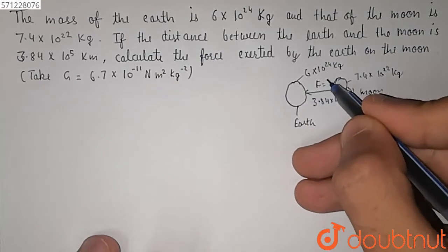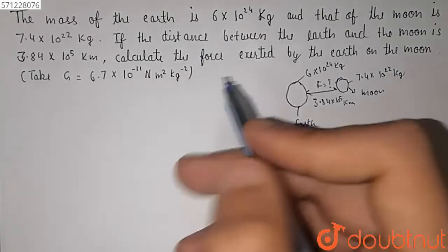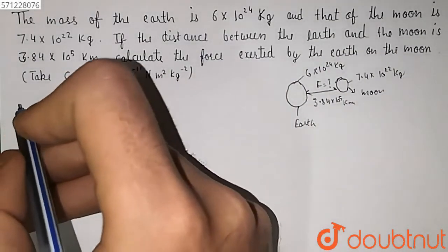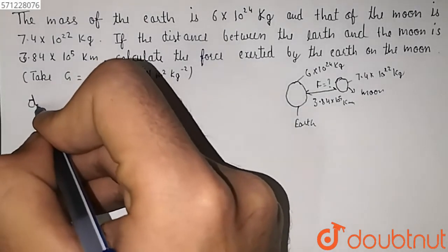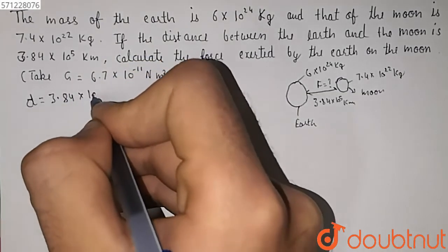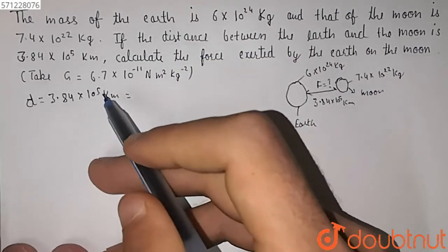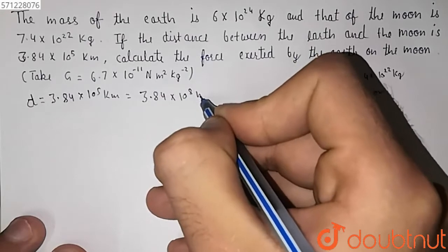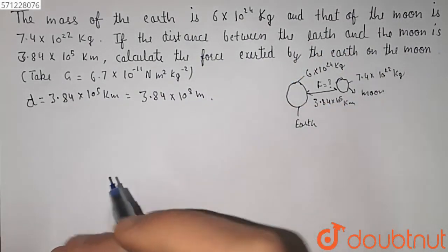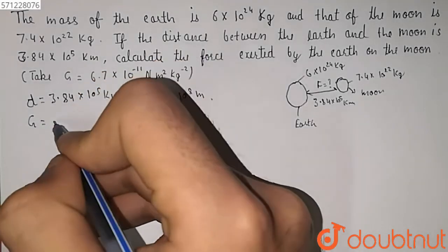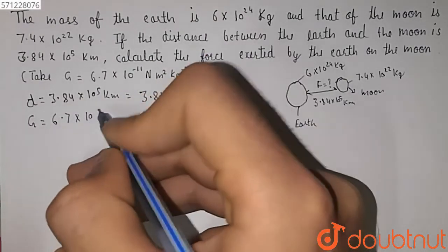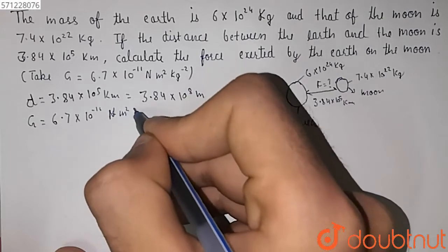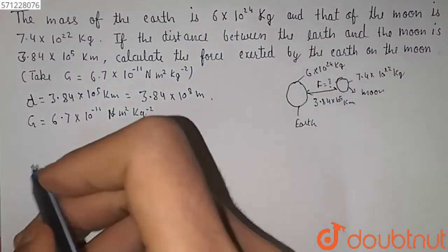To find the force, we first convert the distance from kilometers to meters. Distance d is equal to 3.84 x 10 raised to power 5 kilometers. To convert it to meters, we multiply by 10 raised to power 3, so it will be equal to 3.84 x 10 raised to power 8 meters. The value of the gravitational constant is 6.7 x 10 raised to power minus 11 newton meter square kg inverse square.